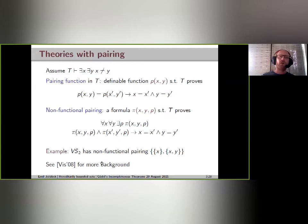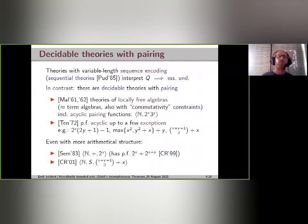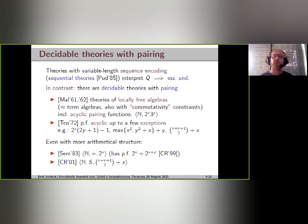If there is an encoding of sequences of variable length — so-called sequential theories — then it is well known that such theories interpret Robinson arithmetic and are therefore essentially undecidable.